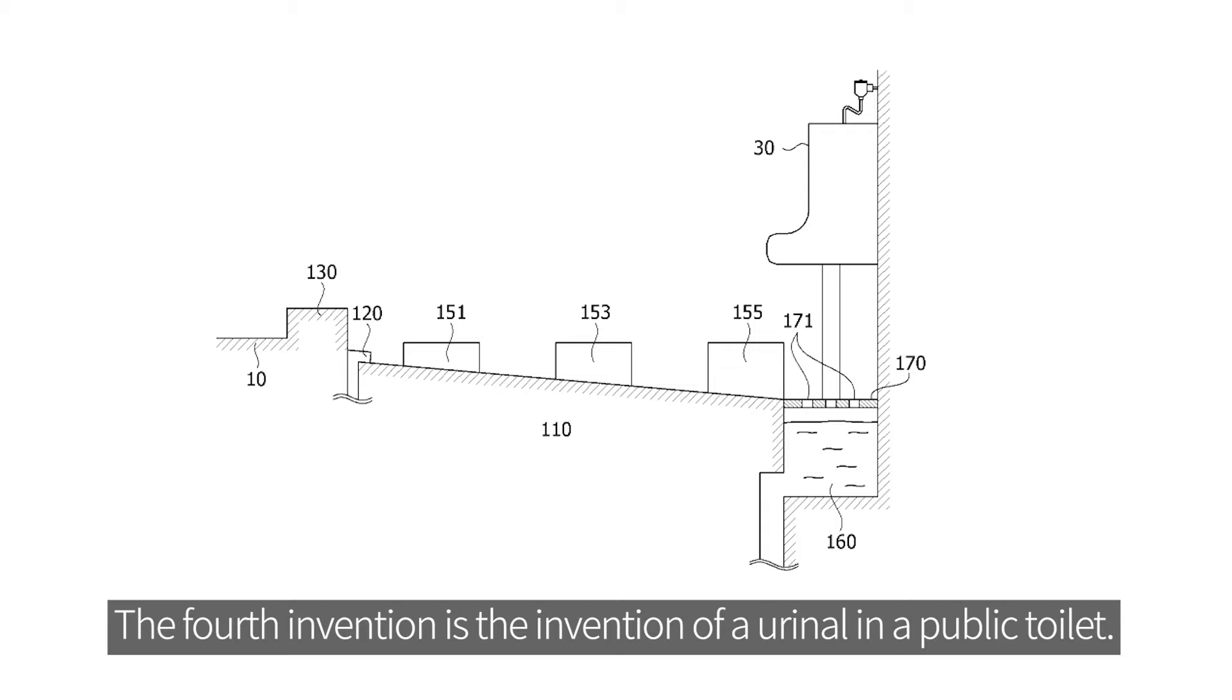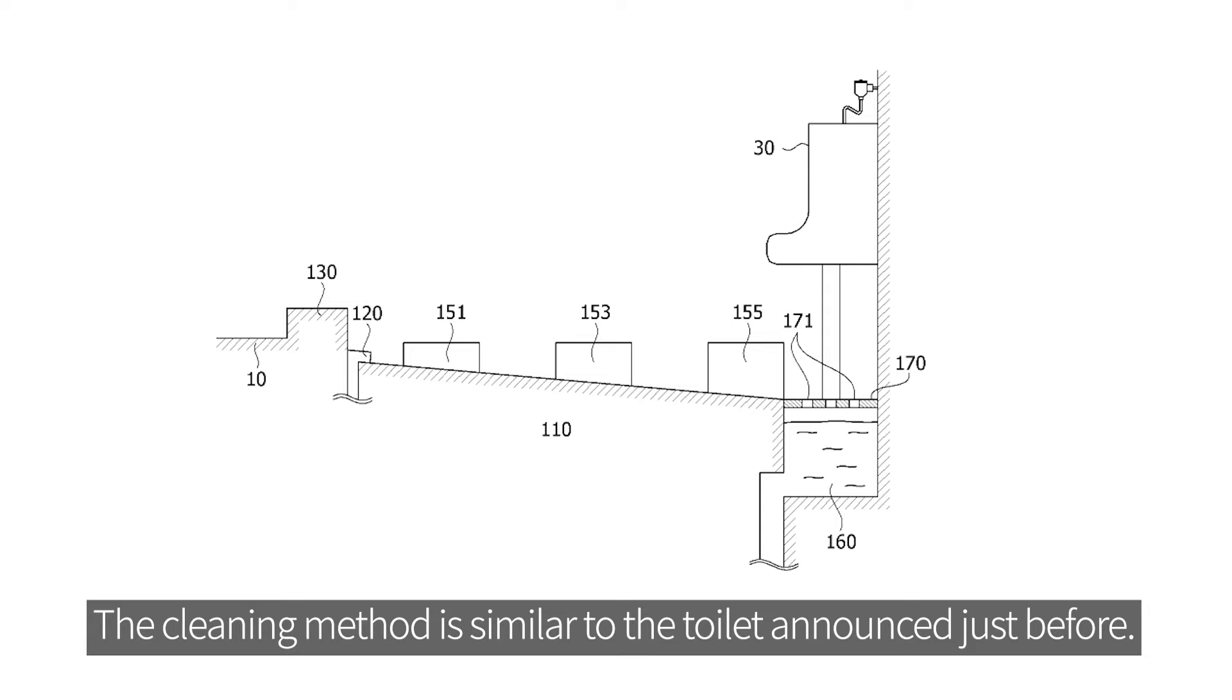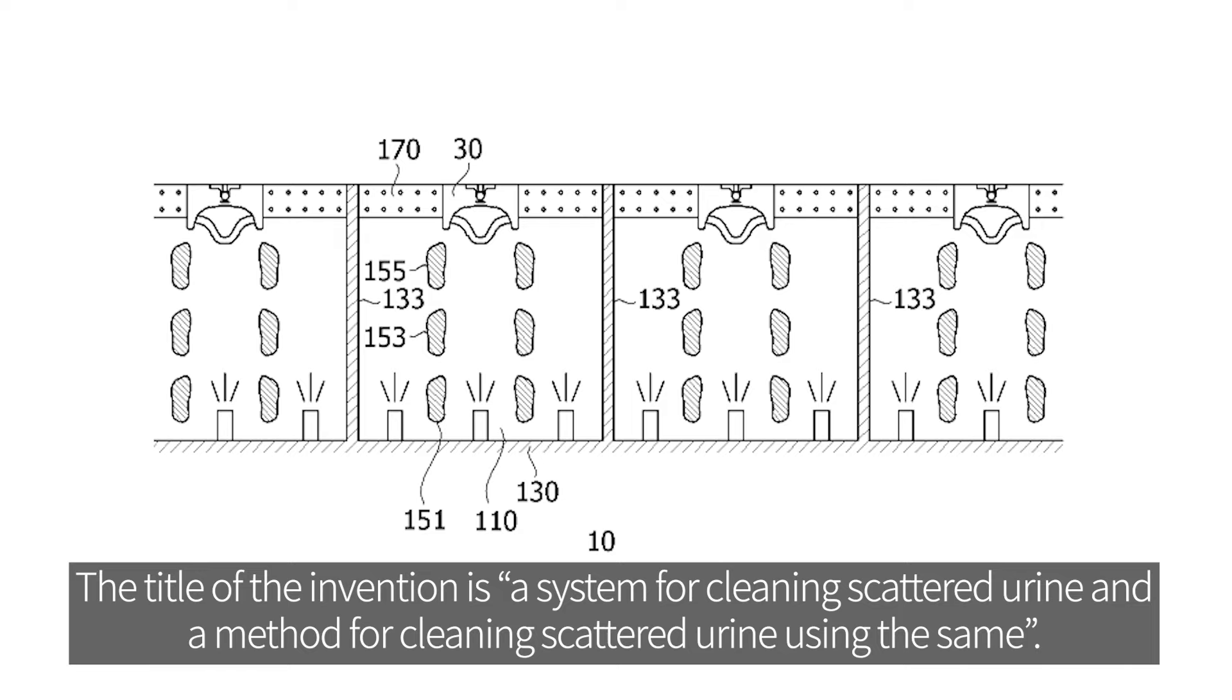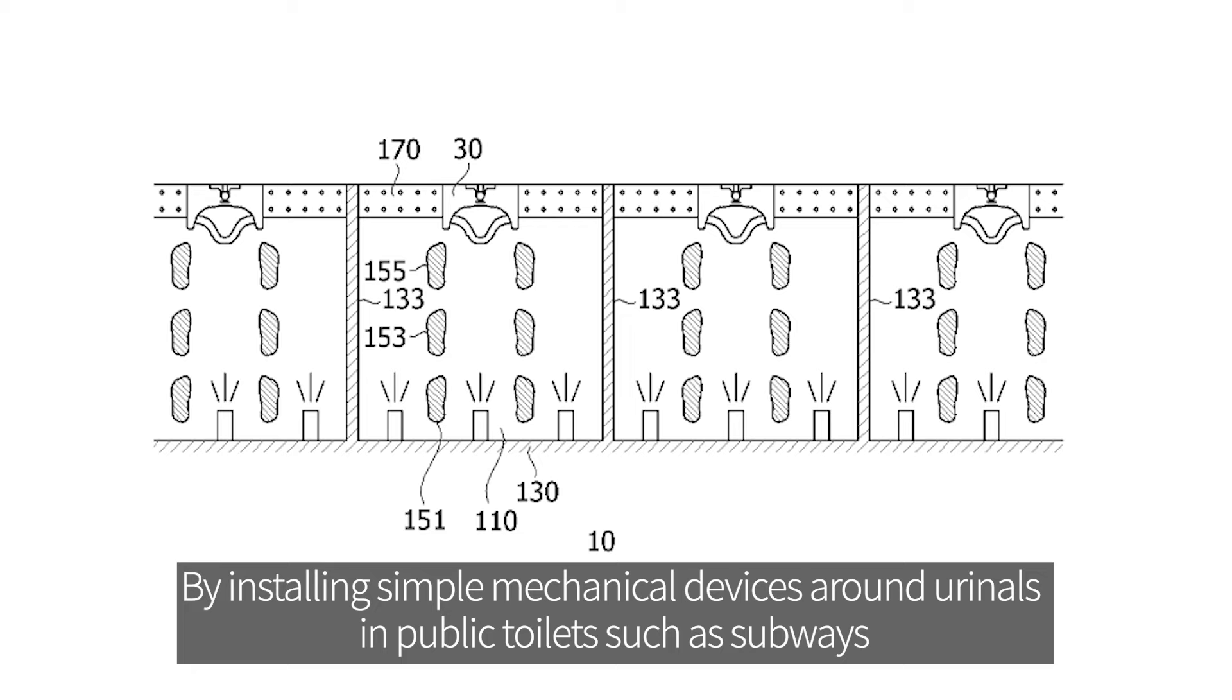The fourth invention is the invention of a urinal in a public toilet. The cleaning method is similar to the toilet announced just before. The title of the invention is a system for cleaning scattered urine and a method for cleaning scattered urine using the same.